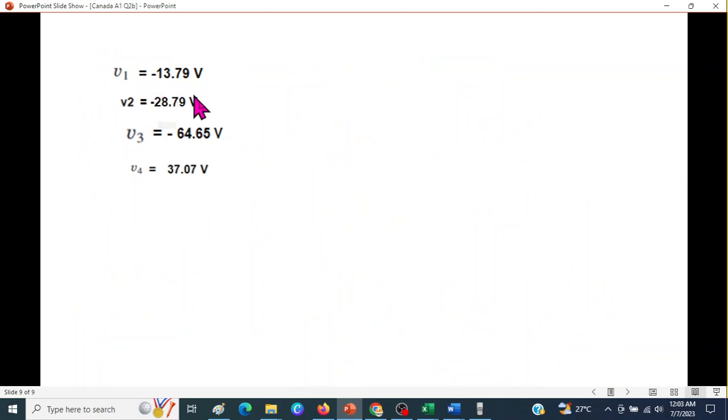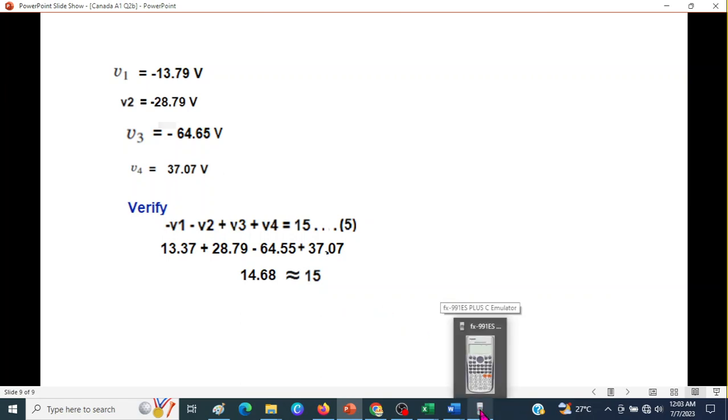And summarize, these are the four variables that we can find. Now, if we have time, you should check. We can use these values to the fifth equation which we had not used. So, this was the fifth equation. And you're plugging in the value, we get 14.68, which is approximately equal to 15. There is another technique to verify, slightly time-consuming, but that is we use the calculator.